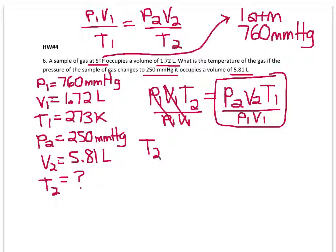Okay, so T2 equals P2, which is 250 millimeters of mercury, V2, which is 5.81 liters, and then T1, 273 Kelvins.